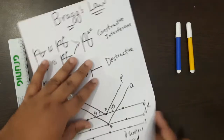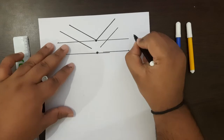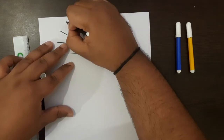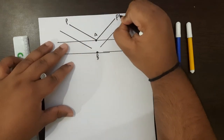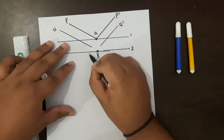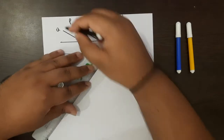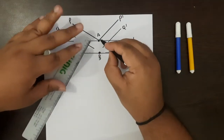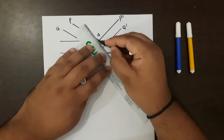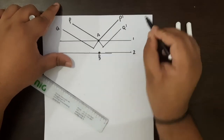Let me redraw the structure. This is our first plane, this is our second plane. This is atom A, this is atom B; P gets scattered to P-dash, Q gets scattered to Q-dash. If P and Q are parallel to each other up to the point of atom A, the Q line is covering some extra distance beyond that — I'll draw that in yellow. This Q line is traveling some extra distance.